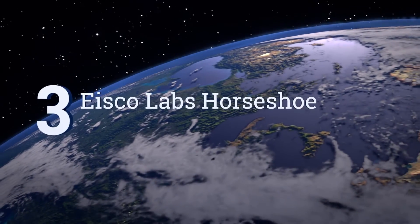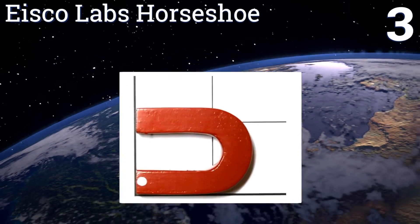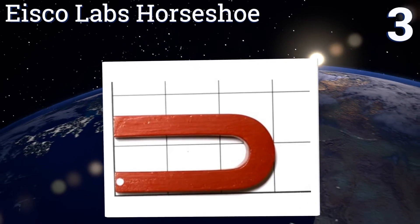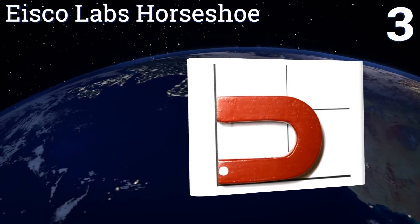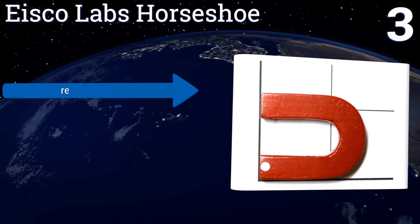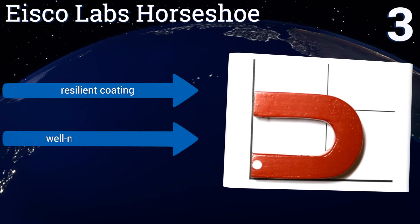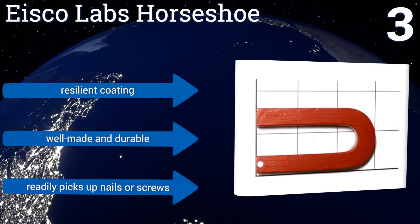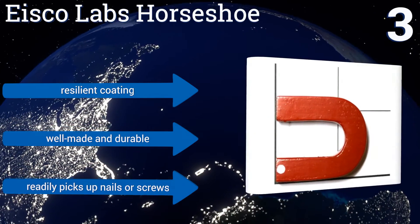Nearing the top of our list at number 3, perfect for use in science classrooms, the Eisco Labs Horseshoe offers a great way to demonstrate how magnets work, compare models of different sizes and strengths, and allow students to conduct tests on distinct types of metals. It features a resilient coating and readily picks up nails or screws. It's well-made and durable.